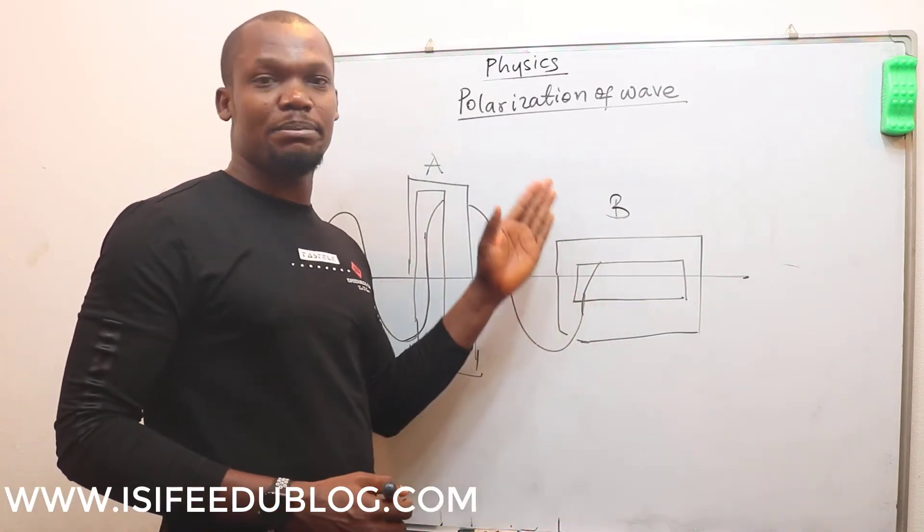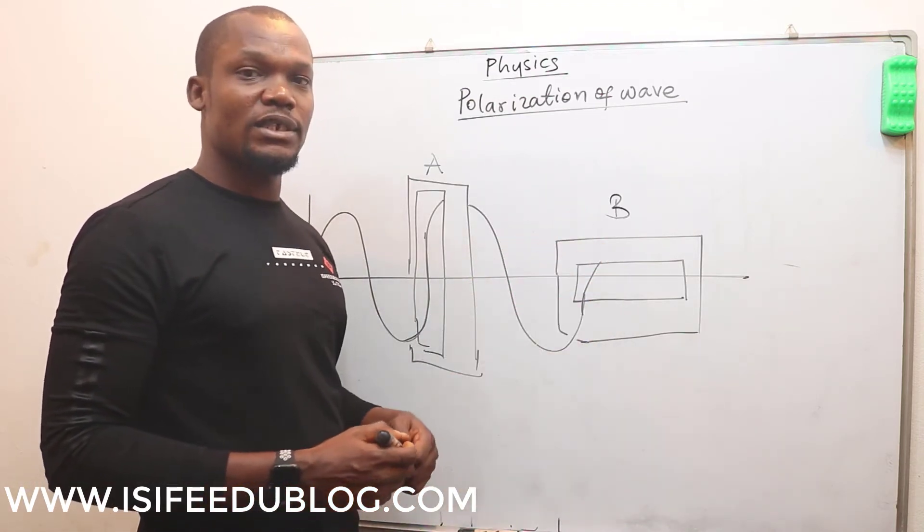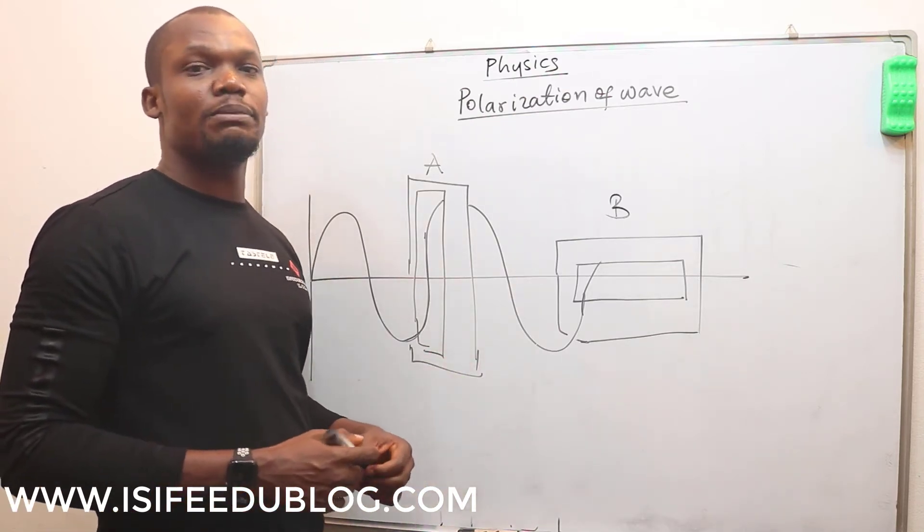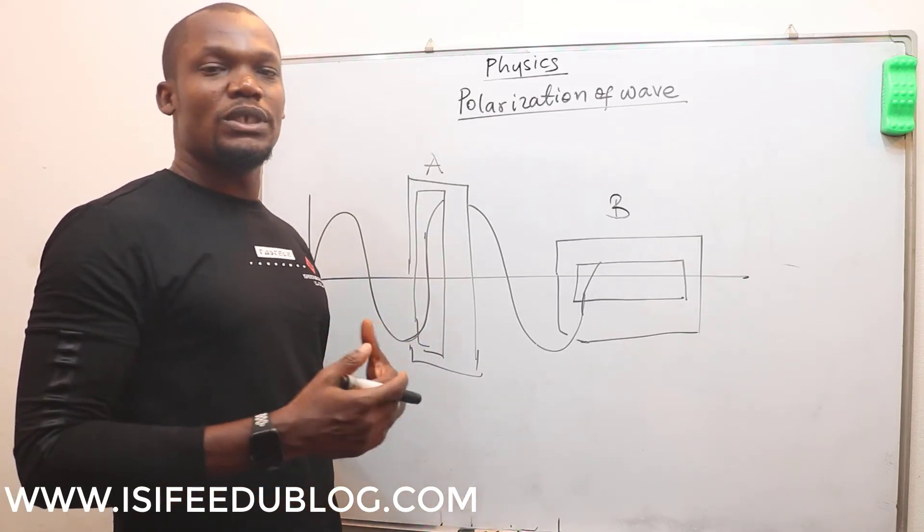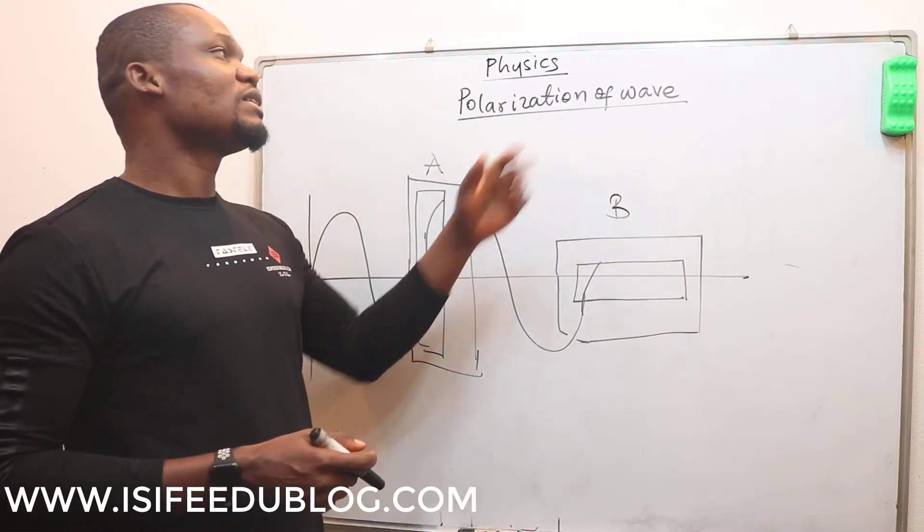Therefore we call point B the plane of polarization. This polarization is very important in producing polaroids, which we use in polarizing some waves.